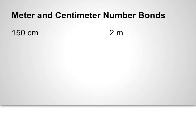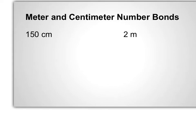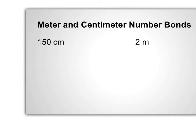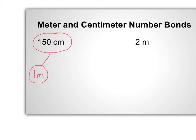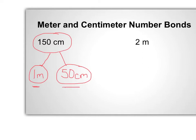Now we are going to look at meter and centimeter number bonds. They're called number bonds because it's how they are bonded together. If we think back to what we just learned, we know that 1 meter has 100 centimeters. So if I have 150 centimeters, I can break that up using that knowledge. 100 of those centimeters can be represented as 1 meter, and I have 50 centimeters left over. So 150 centimeters is the same as 1 meter and 50 centimeters together — that is a number bond.